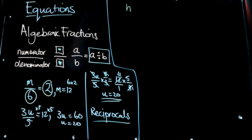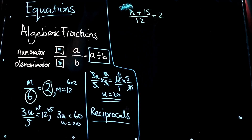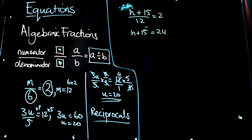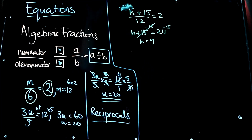Next example: (h + 15) over 12 equals 2. We can use the trick from before — 2 times 12 equals 24 — so what's on the numerator has to equal 24. That gives us the equivalent equation h + 15 = 24. Subtracting 15 from both sides, we get h equals 9.